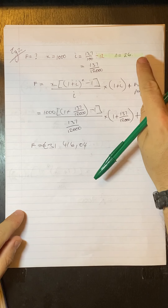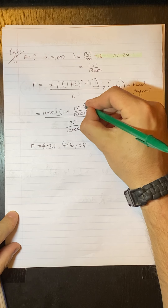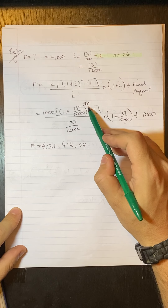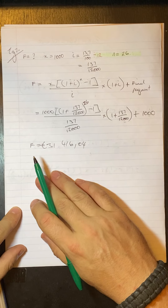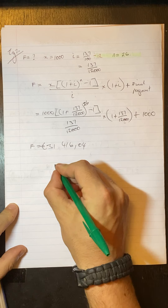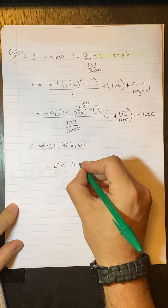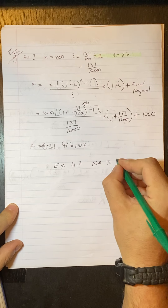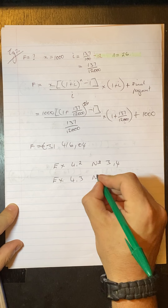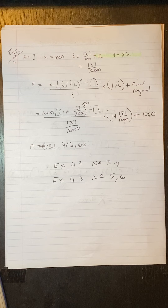The tricky part was getting the number of payments correct — that n equals 26 — and just remember that your final payment won't get any interest because it has no time to earn that interest. So, Grade 12s, what I'd like you to do is exercise 4.2 numbers three and four, and then exercise 4.3 numbers five and six.